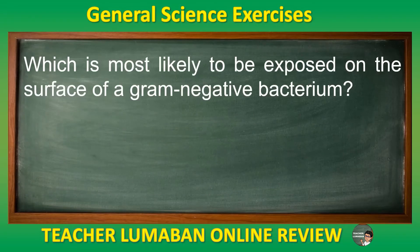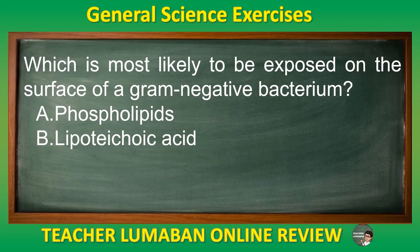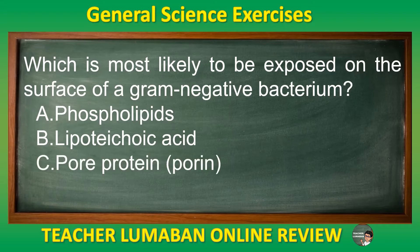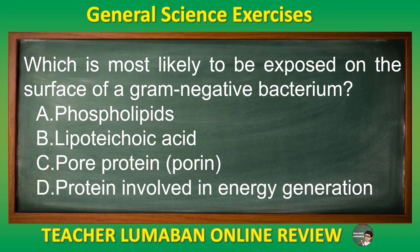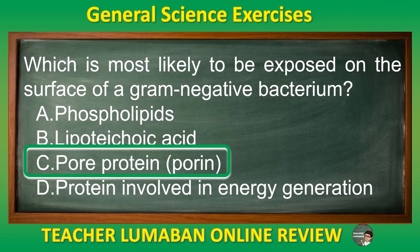Which is most likely to be exposed on the surface of a gram-negative bacterium? Letter A: Phospholipids. Letter B: Lipoteichoic Acid. Letter C: Pore Protein (Porin). Letter D: Protein Involved In Energy Generation. The correct answer is Letter C: Pore Protein (Porin).